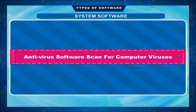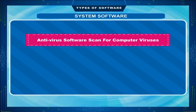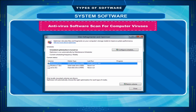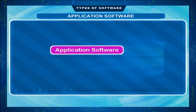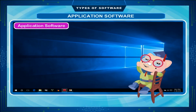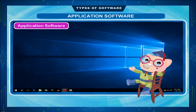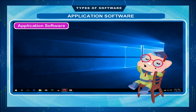Antivirus Software scans for computer viruses. Disk Defragmenter detects computer files whose contents are scattered across several locations on the hard disk and moves the fragments to one location to increase efficiency.